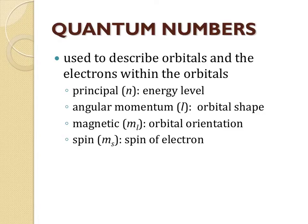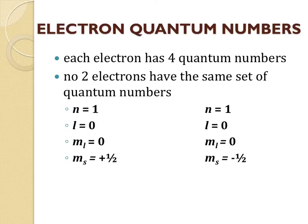We use quantum numbers to describe the orbitals within the atoms and the electrons within the orbitals. The first three quantum numbers come from Schrödinger and describe the orbitals, and then the last number describes the electrons within the orbitals. Our first quantum number is the principal quantum number — that's our energy level. The second quantum number is our angular momentum quantum number, and that's our orbital shape. The magnetic quantum number describes orbital orientation — that's our third quantum number. And our fourth quantum number is the spin quantum number, which describes the spin of the electron.